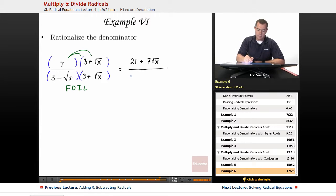On the bottom, we have 9 plus 3 times the square root of x minus 3 times the square root of x, and then minus the square root of x times the square root of x.